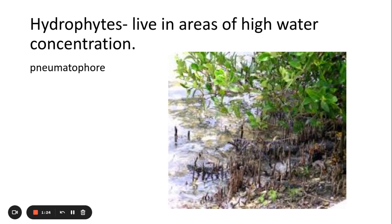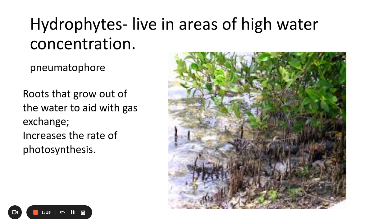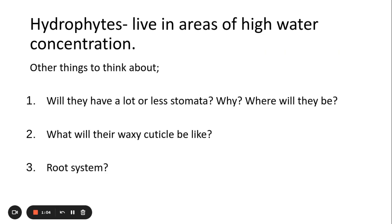Hydrophytes also have specialized roots called pneumatophores. Because they live in water, water is not a limiting factor for photosynthesis — the main limiting factor is gas exchange and the gases needed for photosynthesis. So they have these specialized roots that grow out of the water to aid with gas exchange and therefore help increase the rate of photosynthesis.